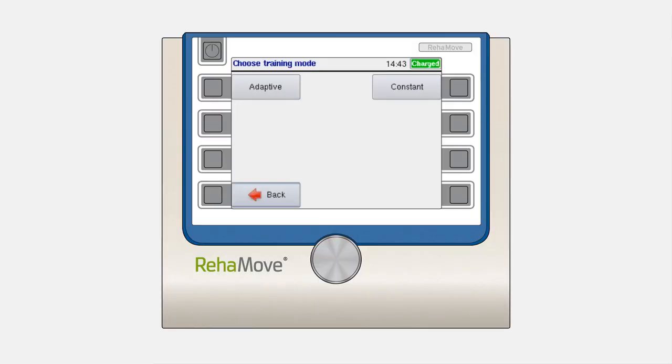When you have chosen either Adaptive or Constant mode, you will be automatically forwarded to the Channel configuration. Here, you can choose between three options: unilateral, bilateral, or individual.